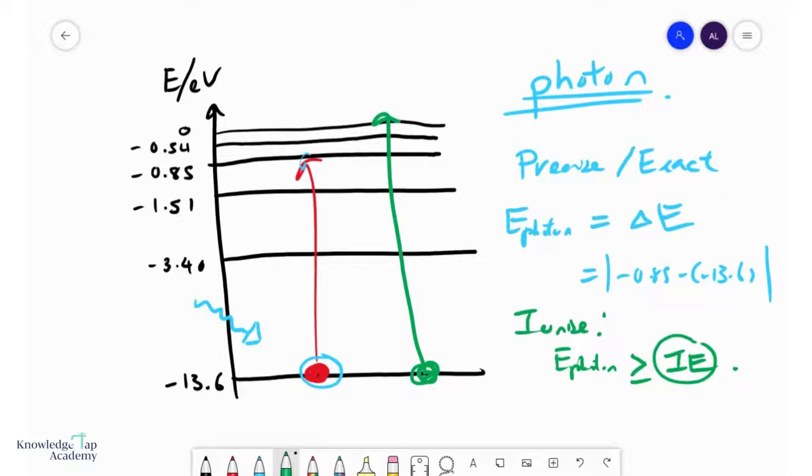then the photon energy must be precisely equal to the energy difference between the levels, unless you ionize, in which case you just need to be greater than the ionization energy.